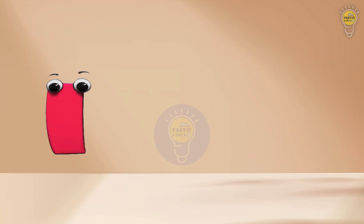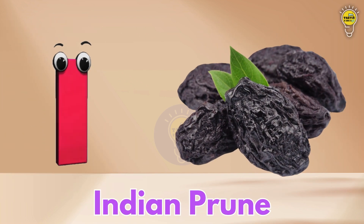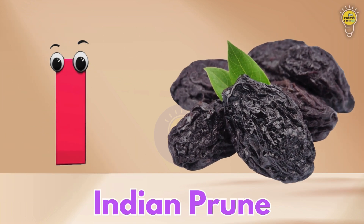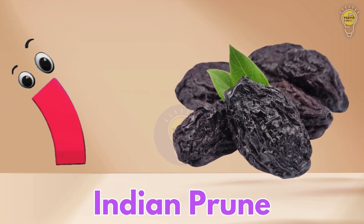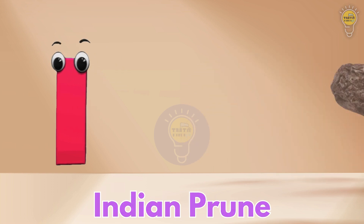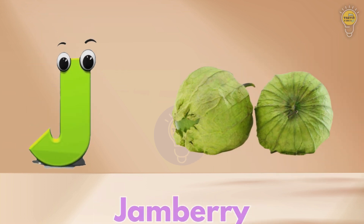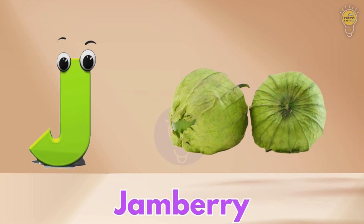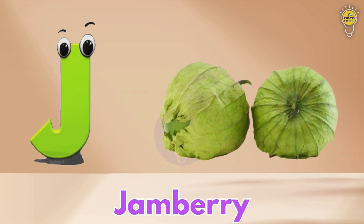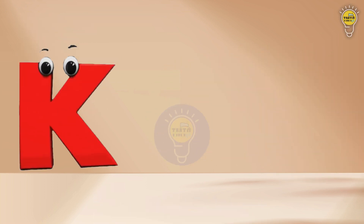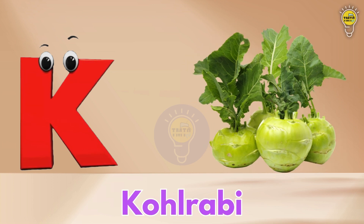I is for Indian Prune. Indian Prune. J is for Jambury. Jambury. K is for Kohlrabi.